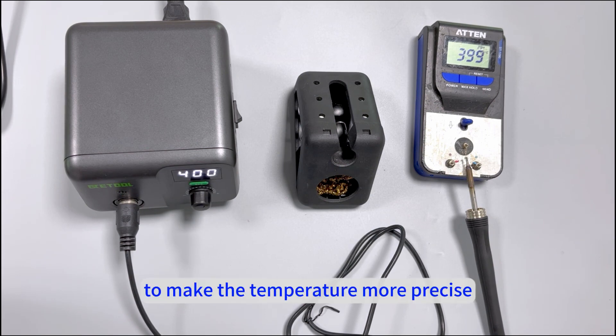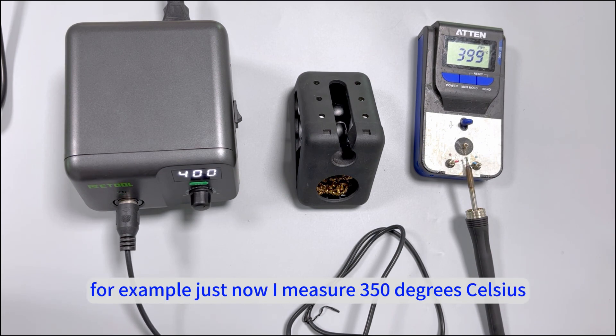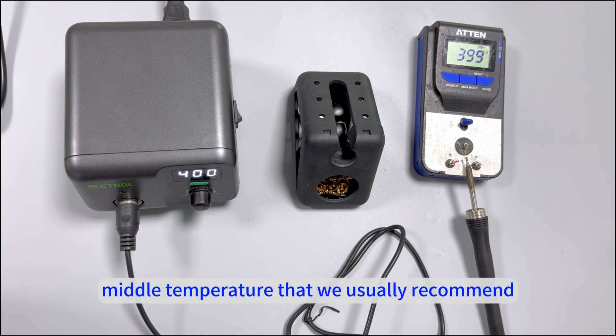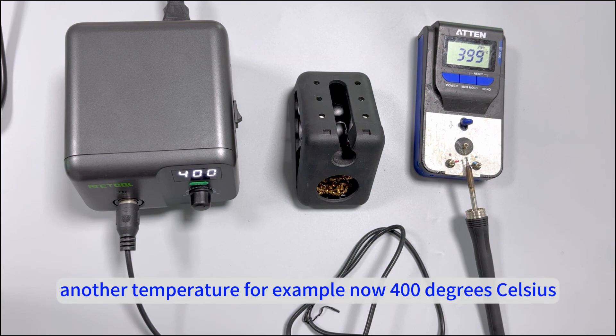So, to make the temperature more precise, we suggest calibrating the actual temperature. For example, I just measured 350 degrees Celsius, and this is the middle temperature that we usually recommend measuring. And another temperature, for example, now 400 degrees Celsius.